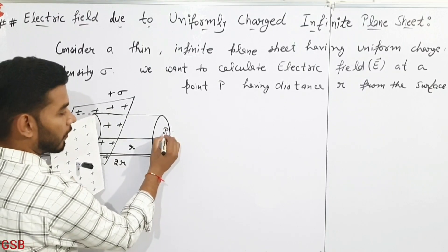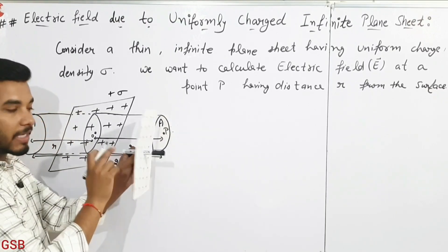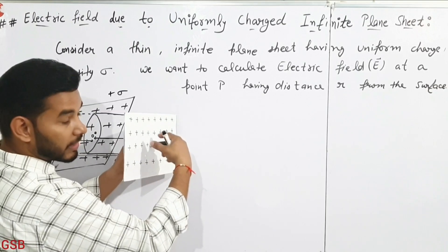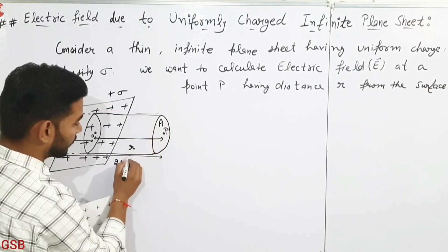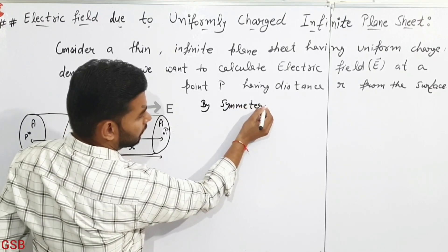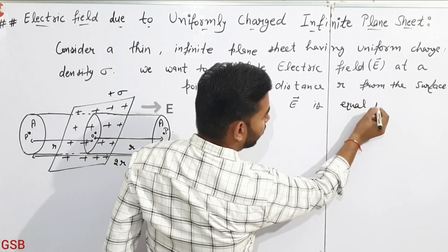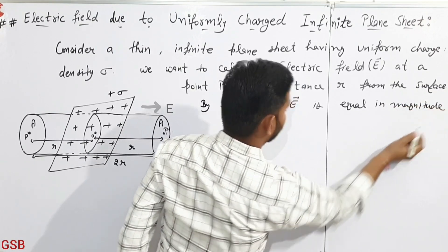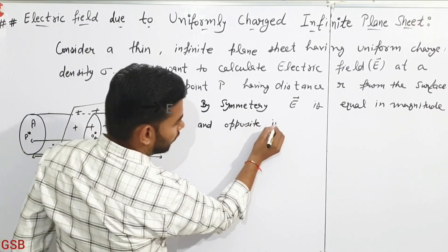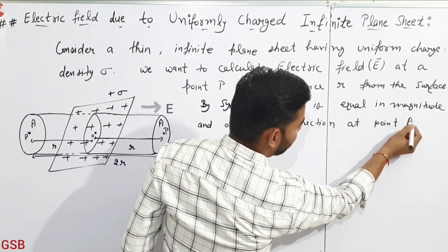The electric field lines of force pass through the two plane surface areas of the given cylinder — surface one and surface two. However, electric field lines do not pass through the curved surface area of the given cylinder. By symmetry, the electric field vector E is equal in magnitude and opposite in direction at points P and P'.